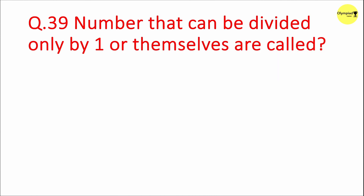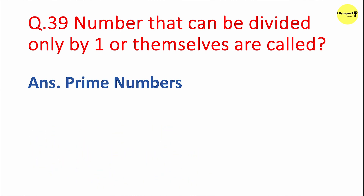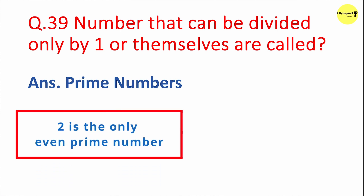Question 39: Numbers that can be divided only by one or themselves are called prime numbers. A prime number is a positive integer greater than one that has no positive integer divisors other than one and itself. In other words, a prime number can only be divided by one and itself without leaving a remainder. 2 is the only even prime number.